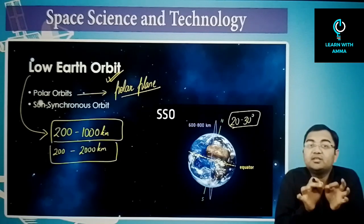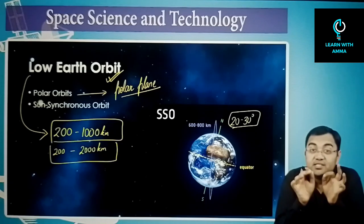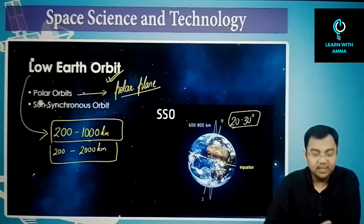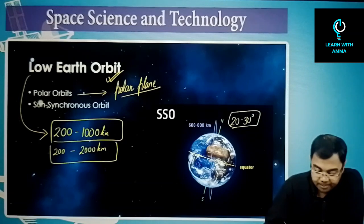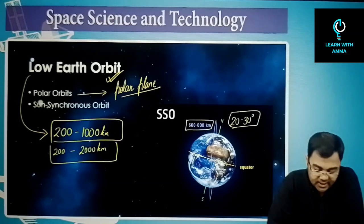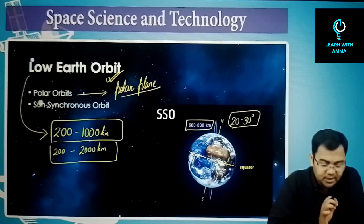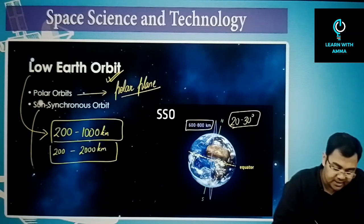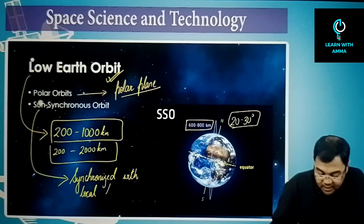A very special case of polar orbit is the sun-synchronous orbit, typically at around 600 kilometers altitude. It has been named sun-synchronous for a special reason — this orbit is synchronized with the local solar time.